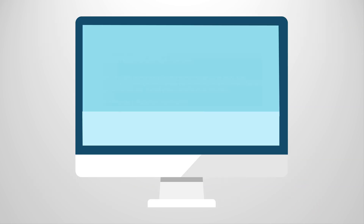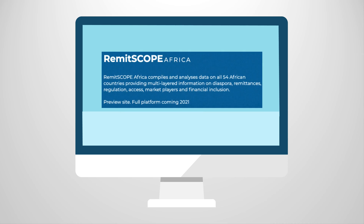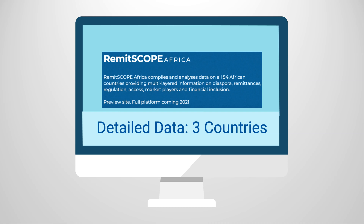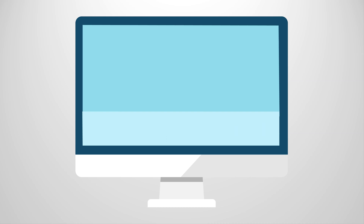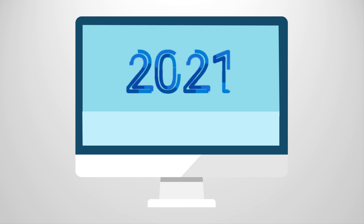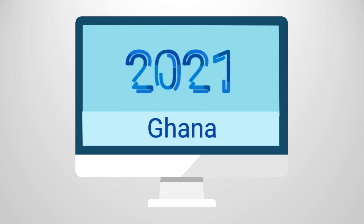Right now, the site is still in its preview phase, which means a limited amount of the data is available for 19 countries, and detailed data is only available for Gambia, Ghana, and Senegal. However, the full site is expected to launch this year. Nevertheless, we can still explore the full depth of this tool using Ghana as an example.